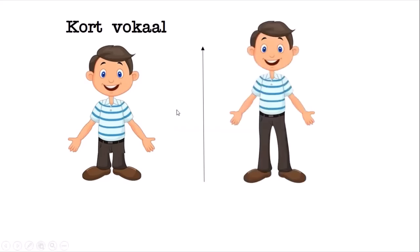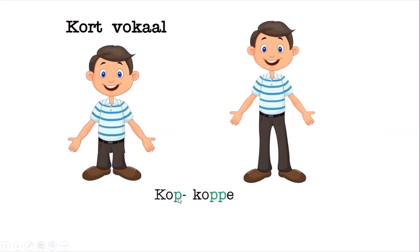En hoe gaan ons dat doen? We are going to double the consonant next to the vowel. Our kort vokaal word is 'kop' - die vokaal is kort, the O. So we double up the consonant next to the short vowel and then add the E. Kop word koppe. Mat word matte. Pil word pille.